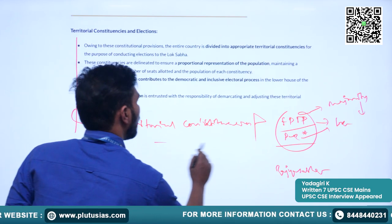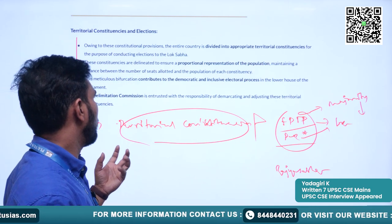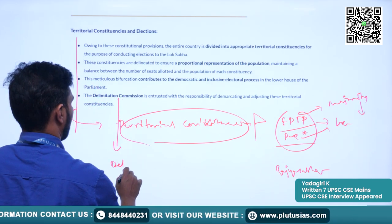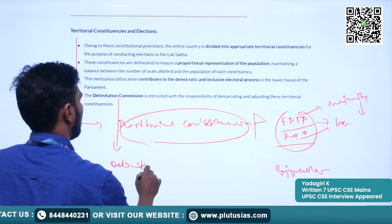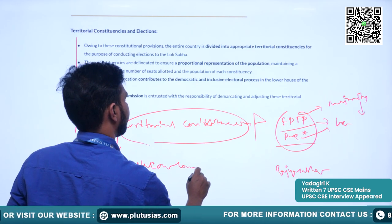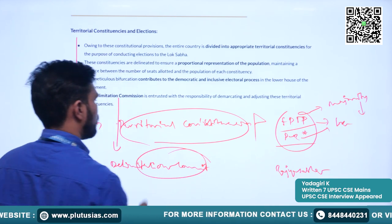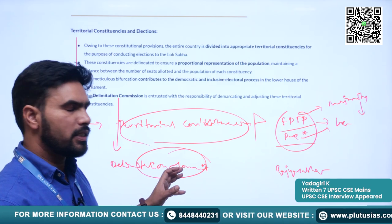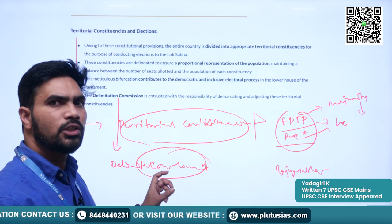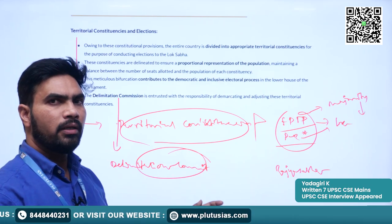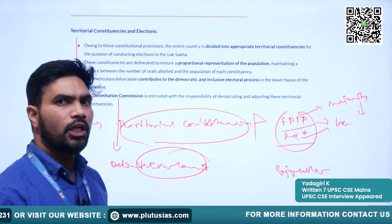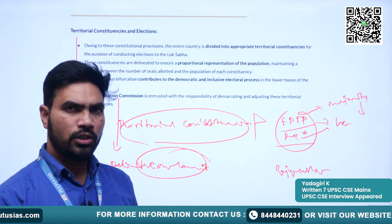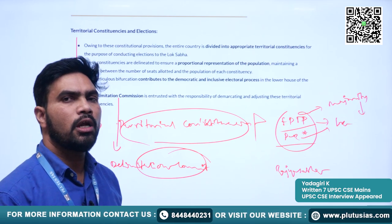To elect the members of both Lok Sabha and Rajya Sabha, there will be territorial constituencies. The delimitation commission is constituted every 10 years after the census by the president. It has the responsibility of creating and adjusting the territorial constituencies. It also has to adjust the territorial constituencies after every census — that is its original mandate.